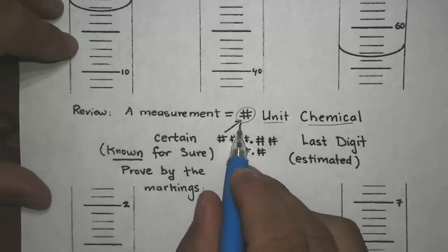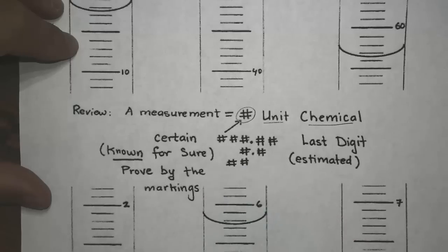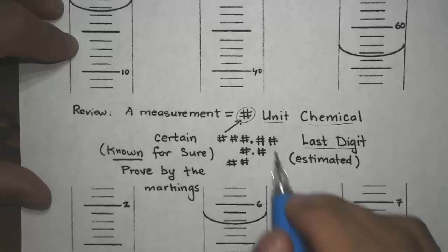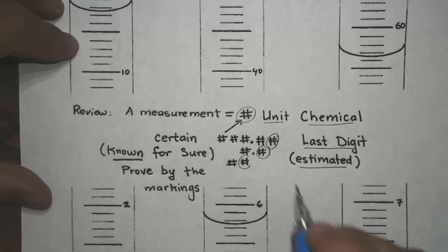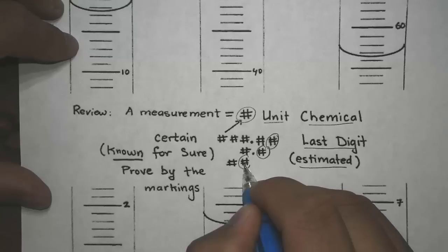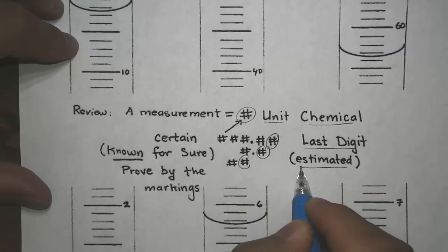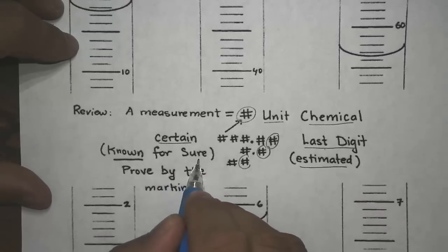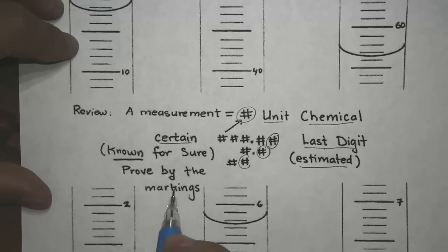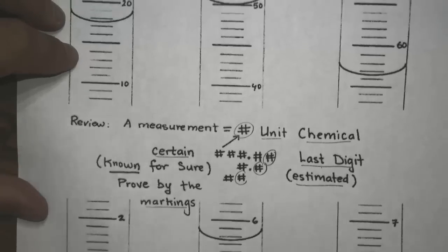How do we determine the number based on an instrument? A number will have two types of digits. The most obvious one is the last digit — that is where the number ends — and it is estimated, so we don't know that value for sure. The other type is called certain: we know for sure that it is there, and it can be proven by the markings on the instrument. Let's look at some specific examples.